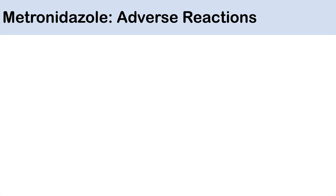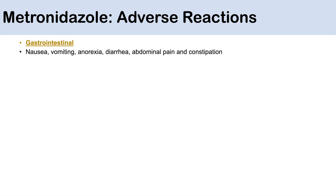So what are some of the adverse reactions of metronidazole use? Some of the big ones are gastrointestinal side effects. These include nausea, vomiting, anorexia, diarrhea, abdominal pain, and constipation. When taken orally, a patient may also complain of an unpleasant metallic taste.